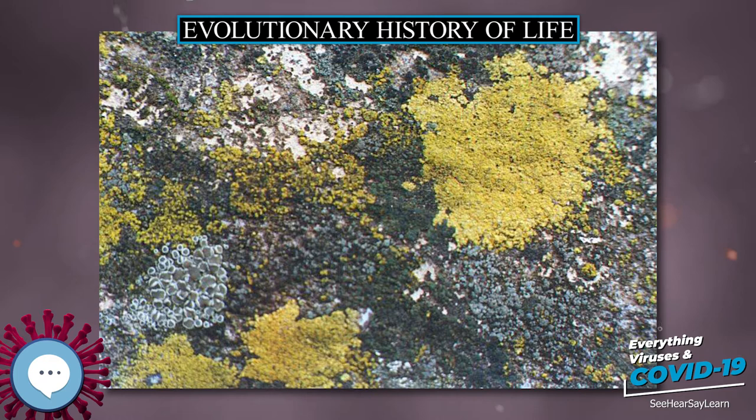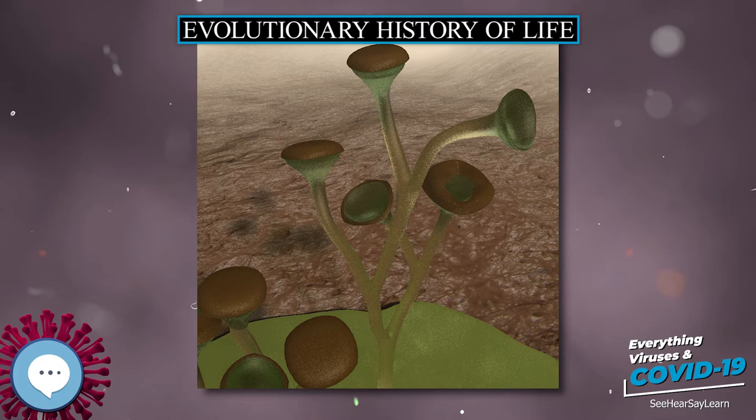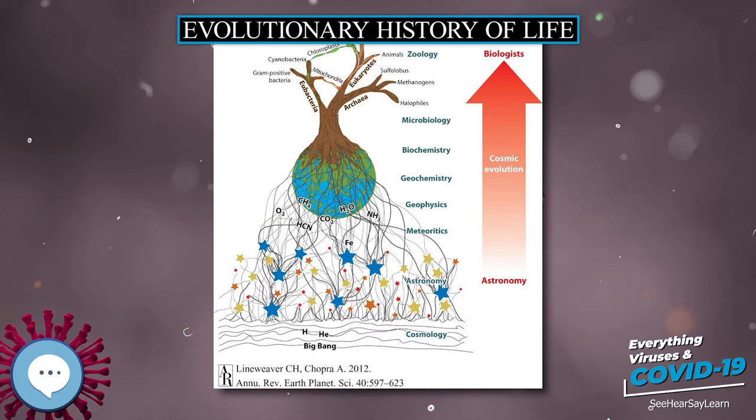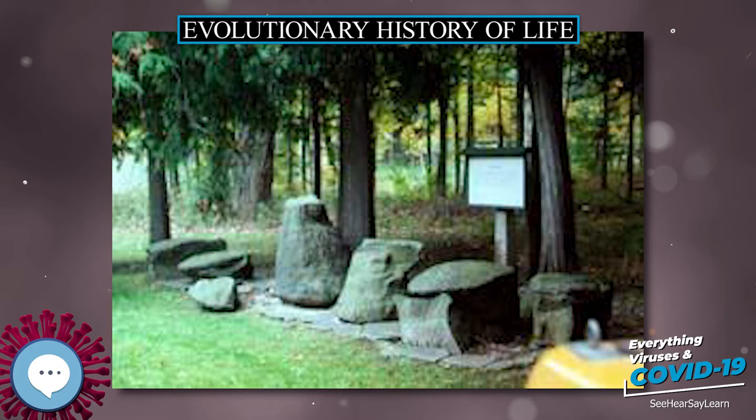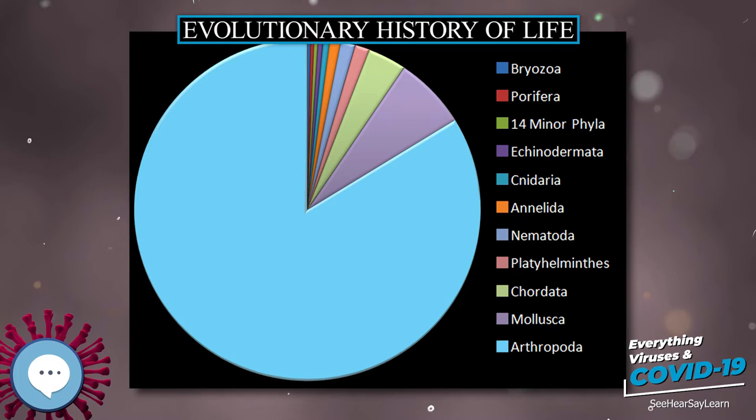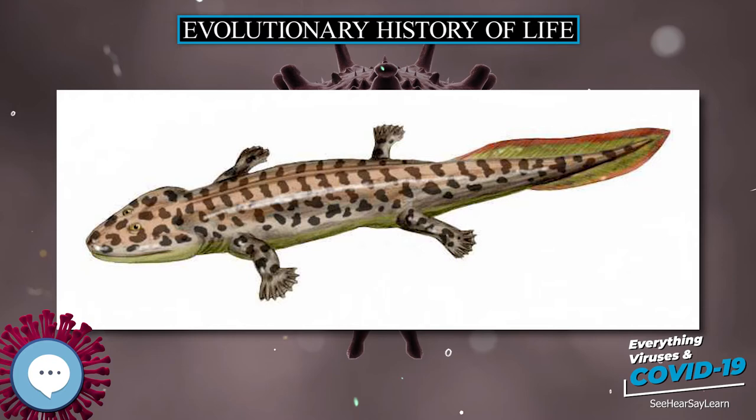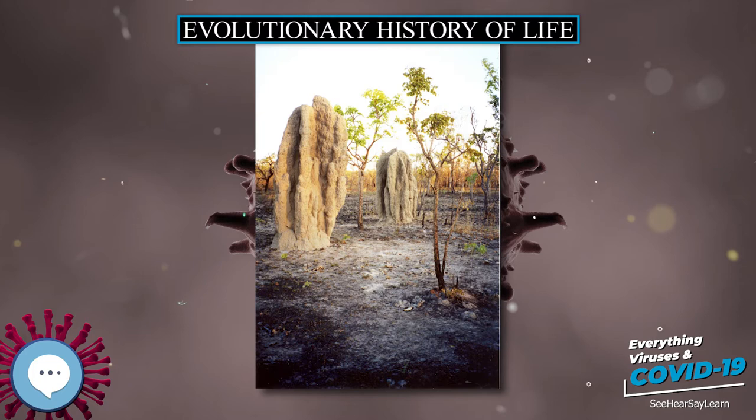In 2015, possible remains of biotic life were found in 4.1 billion-year-old rocks in Western Australia. In March 2017, putative evidence of possibly the oldest forms of life on Earth was reported in the form of fossilized microorganisms discovered in hydrothermal vent precipitates in the Nuvvuagittuq Belt of Quebec, Canada, that may have lived as early as 4.28 billion years ago, not long after the oceans formed 4.4 billion years ago, and not long after the formation of the Earth 4.54 billion years ago.